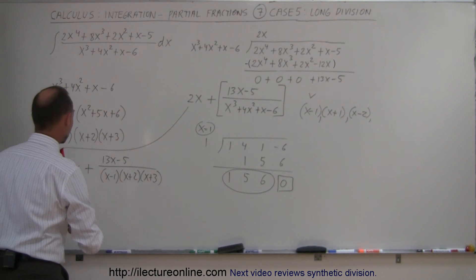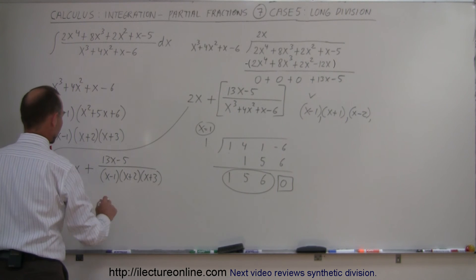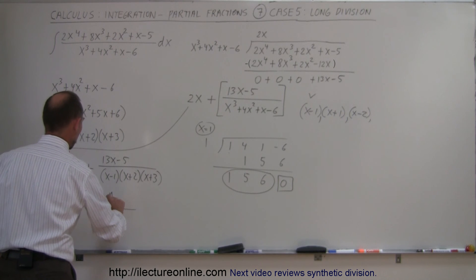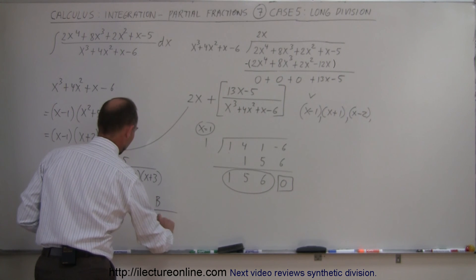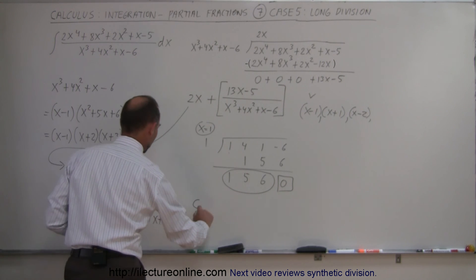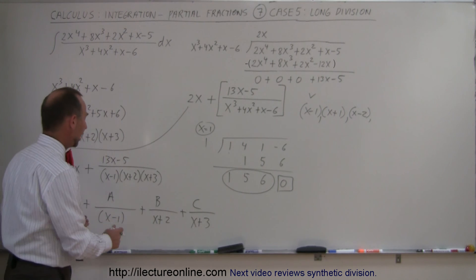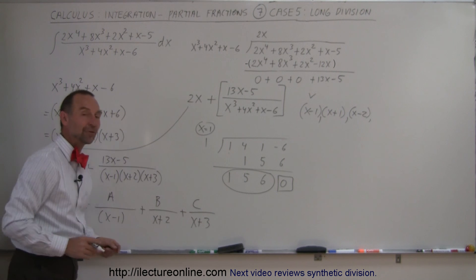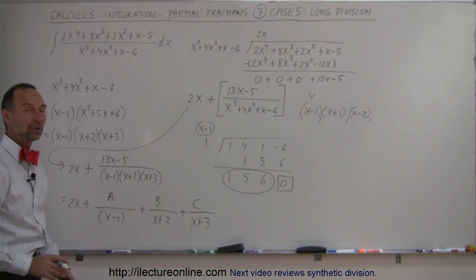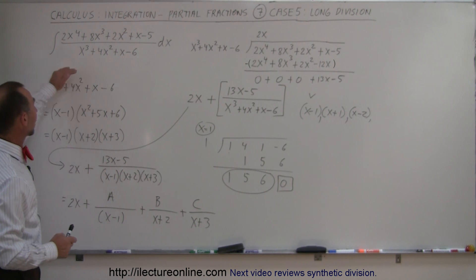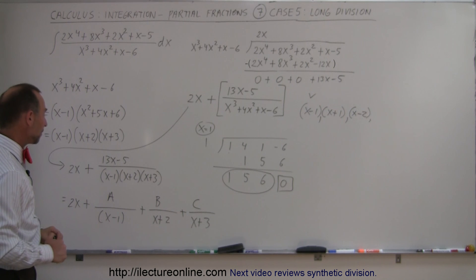Notice it's three linear factors. So this can now be written as 2x plus the three fractions, which would be A over x minus 1 plus B over x plus 2 plus C over x plus 3. And then you go ahead and find A, B, and C to come up with those three fractions. Add that to 2x. And then you can integrate four separate terms instead of trying to integrate this one by itself, which I think that would be fairly impossible to try and do that.